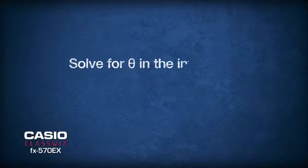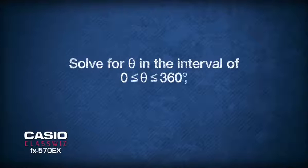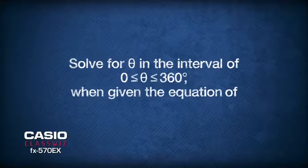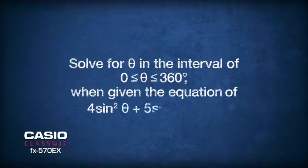Here, we are required to solve for theta in the interval of 0 to 360 degrees when given the equation 4sin²θ + 5sinθ + 1 = 0.